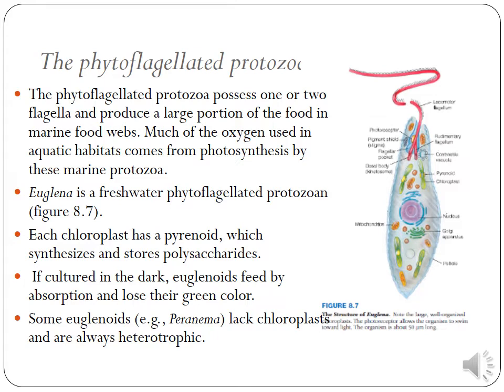Phytoflagellate protozoa of Euglenozoa possess one or two flagella. Euglena is a freshwater phytoflagellate. Each chloroplast has a pyrenoid body which synthesizes and stores polysaccharide. If cultured in the dark — in the absence of light — Euglena feeds by absorption and loses its green color.